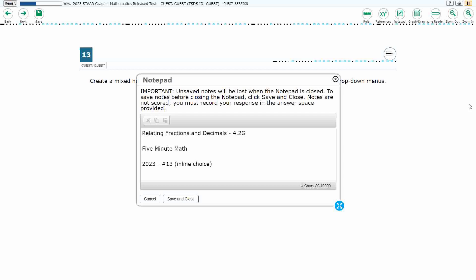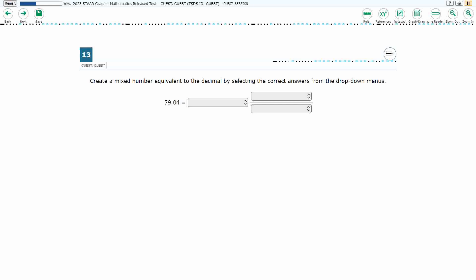Hello and welcome to 5-Minute Math. Today we are looking at the 4th grade concept of relating fractions and decimals. This is standard 4.2G in the great state of Texas, and we are using item number 13, which is a new item type called inline choice, of the 2023 released STAR test.